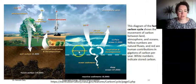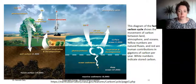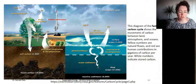This chart here is a diagram of the fast carbon cycle, which shows the movement of carbon between land, atmosphere, and oceans over the sort of time periods that humans live.